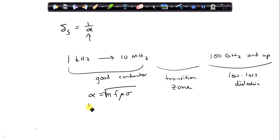And since skin depth is 1 over alpha, we're going to get a skin depth which decreases according to 1 over square root of f. And since the others are constant, this is going to change with frequency.